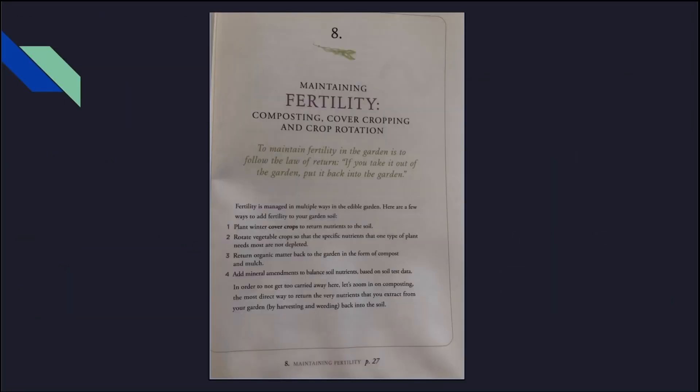Now pay close attention — I will be reading you an excerpt: Maintaining Fertility — composting, cover cropping, and crop rotation. To maintain fertility in the garden is to follow the law of return. If you take it out of the garden, you put it back into the garden. Fertility is managed in multiple ways in the edible gardens. Here are a few ways to add fertility to your garden soil.